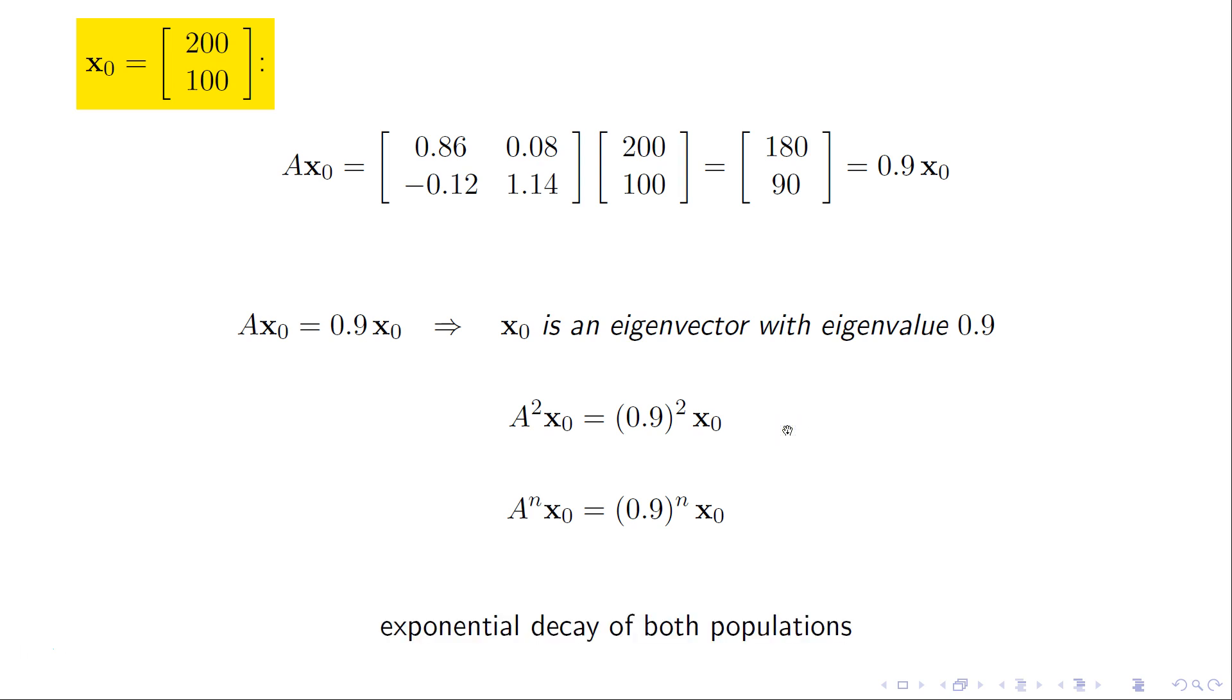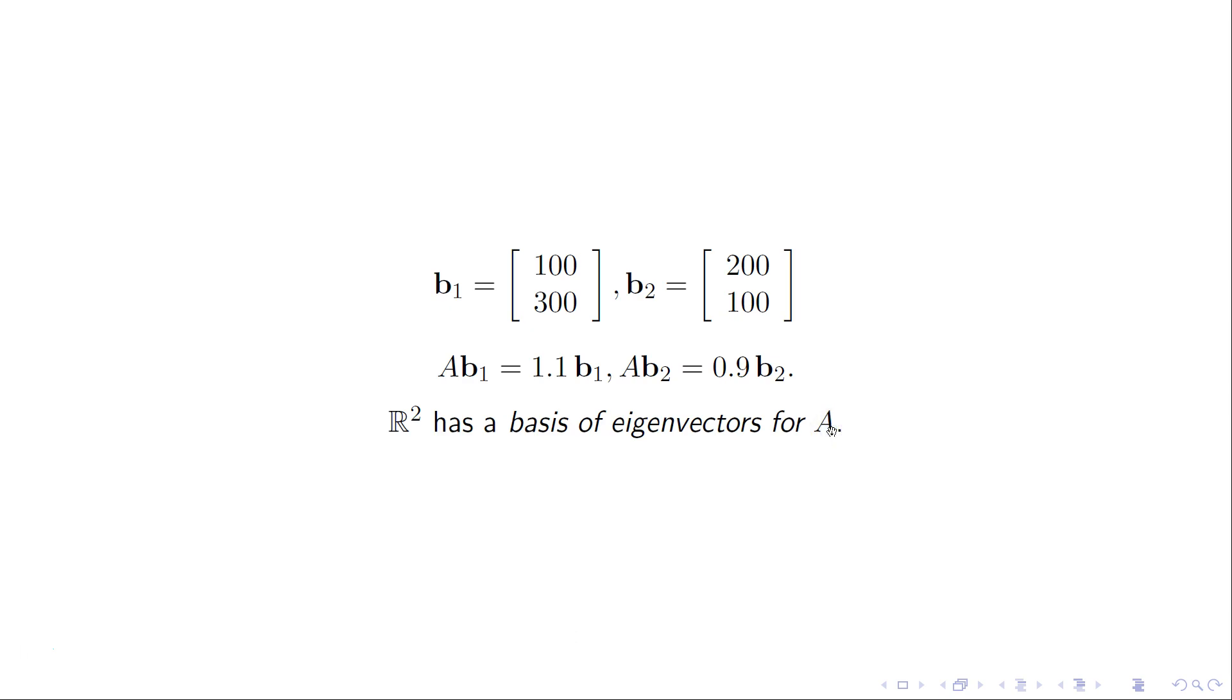Okay, so let's call the b1 and b2 vectors those very two, those very nice vectors that I had in the previous slides. What's important about those vectors is that they are eigenvectors with eigenvalues 1.1 and 0.9 respectively. And they are independent of each other. So they in fact form a basis for R2. R2 has a basis of eigenvectors for this matrix A.